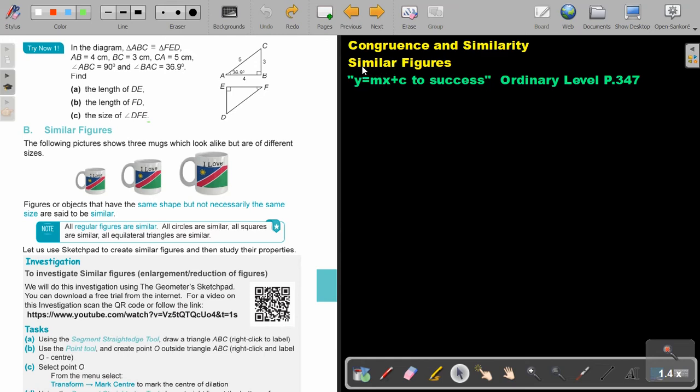In this video we are going to continue with congruence and similarity, but we are going to focus on similar figures. You will find this on page 347 in the Namibia Ordinary Level Mathematics Textbook Y equals MX plus C to success.